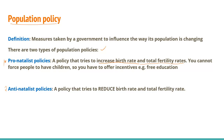Pro-natalist population policy is a policy that tries to increase the birth rate and total fertility rate of a particular country. You cannot force people to have children, so you have to offer incentives such as free education and childcare. Anti-natalist policy is a policy that tries to reduce birth rate and total fertility rate.